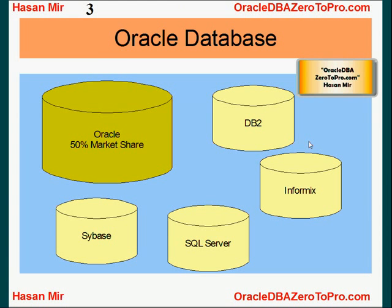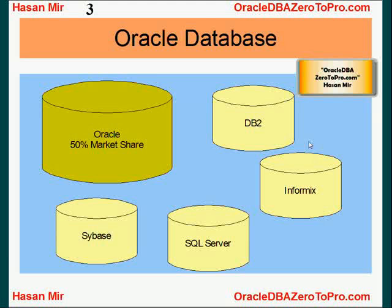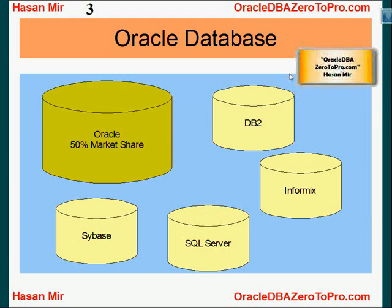Let's talk about where Oracle database fits into the big picture. There is a big market for relational databases — 50% of the market is occupied by Oracle database, so it is a big market share. Other players are DB2 and Informix, both owned by IBM. Microsoft has their own database called SQL Server, and Sybase has their own database called Sybase Database. Oracle Corporation's flagship product is Oracle database, which has 50% of the market share. They were the first player to introduce a relational database in the market. Although Codd was an IBM scientist who introduced relational theory, Oracle was the first to leverage that concept into a product.